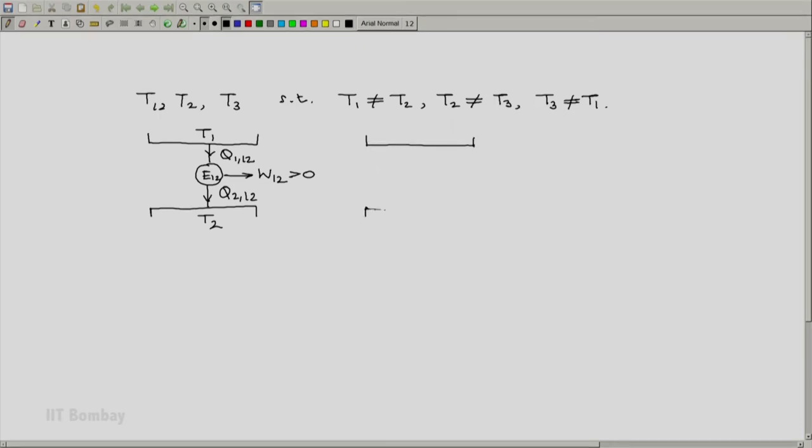And T2 and T3 are such that an engine E23 works between them. It absorbs Q1,23 from the reservoir at T2, it rejects Q2,23 to the reservoir at T3 and it provides a positive amount of work W23. So such an engine works and also such an engine works.